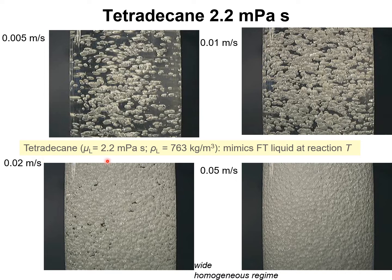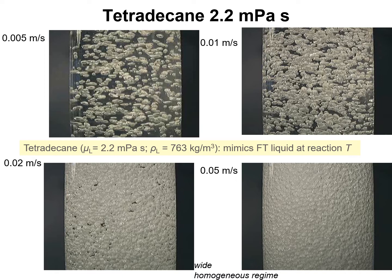Tetradecane, which has a viscosity of 2.2 millipascal seconds and a density of 763 kilograms per cubic meter, mimics the Fischer-Tropsch liquid at reaction temperature. Looking at the hydrodynamics for tetradecane sparged with air in a glass column at a velocity of 5 millimeters per second, we have uniform bubbly flow.